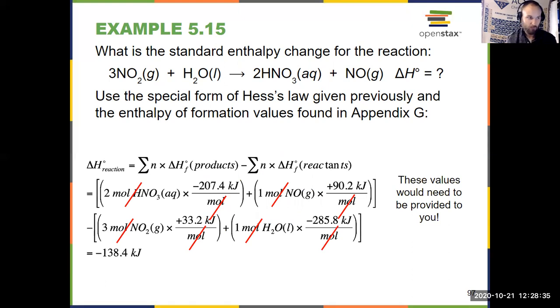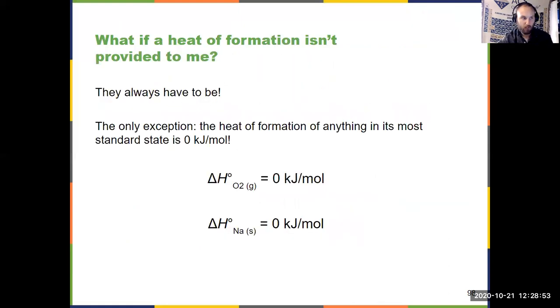Products minus reactants, just making sure you multiply by their respective coefficients. Now those enthalpies of formation always will be provided to you, so don't worry about that. It's one of two applications of Hess's law. Either you're using delta HF, these enthalpies of formation, or you're manipulating equations.